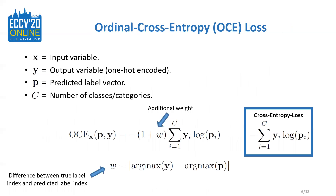This slide describes the proposed ordinal cross-entropy loss. The main difference from the regular cross-entropy loss function is an additional weight multiplied to the cross-entropy loss term. Since the ground-truth label vector is represented as a one-hot coded vector, the regular cross-entropy loss function only focuses on the predicted probability corresponding to the ground-truth label, and the predicted probabilities of the rest of the classes are ignored. The weight W captures the absolute difference between the true label index and the predicted label index during training. If a training sample is correctly classified, W equals 0 and the ordinal cross-entropy loss behaves exactly as the regular cross-entropy loss. However, for misclassified samples, a larger penalty is imposed that is proportional to how far the predicted label is from its true label location.